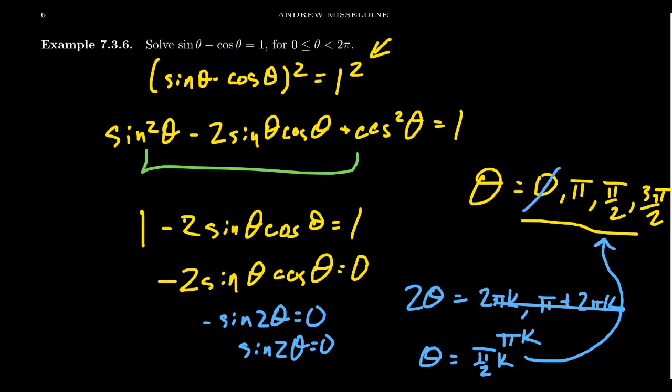If you try π/2, sine is 1, cosine 0. So that one works out. And if you try 3π/2, you'll end up with, for sine, you're going to get negative 1, and for cosine, you get 0. So that doesn't work out here. So the actual solutions are π and π/2.